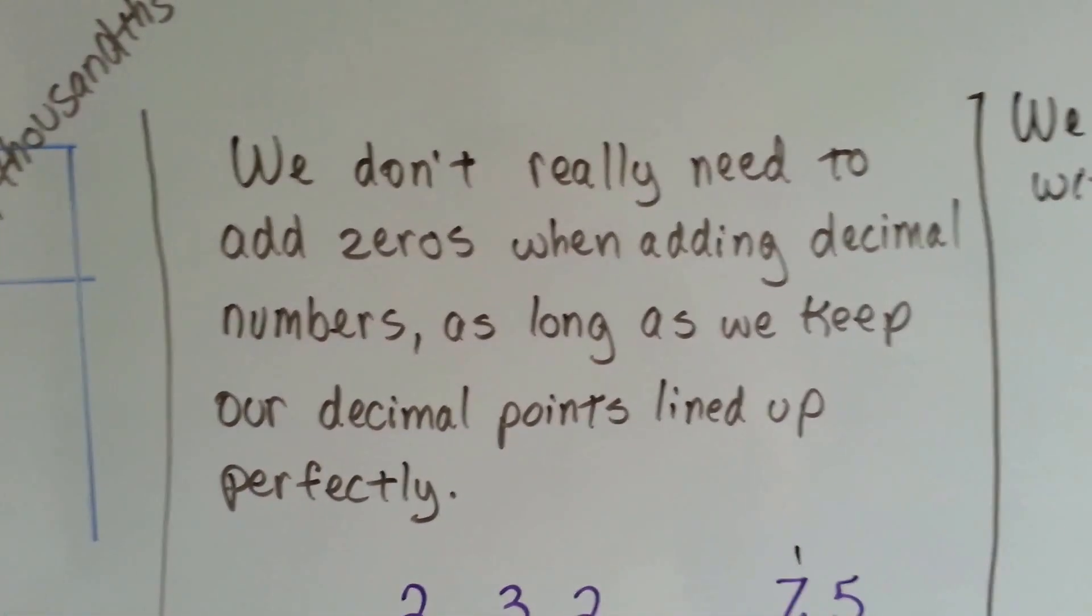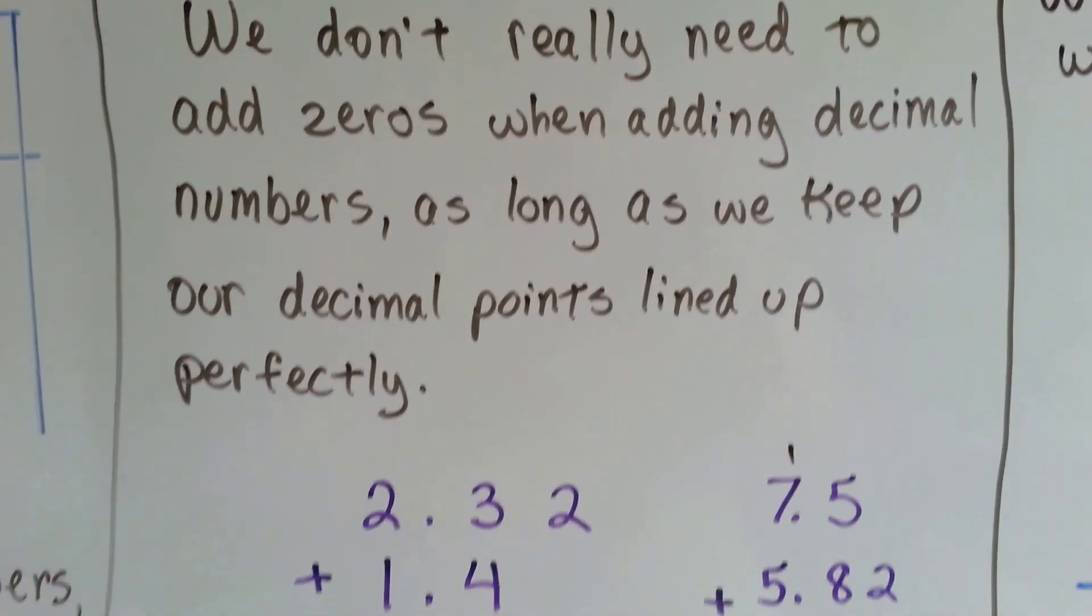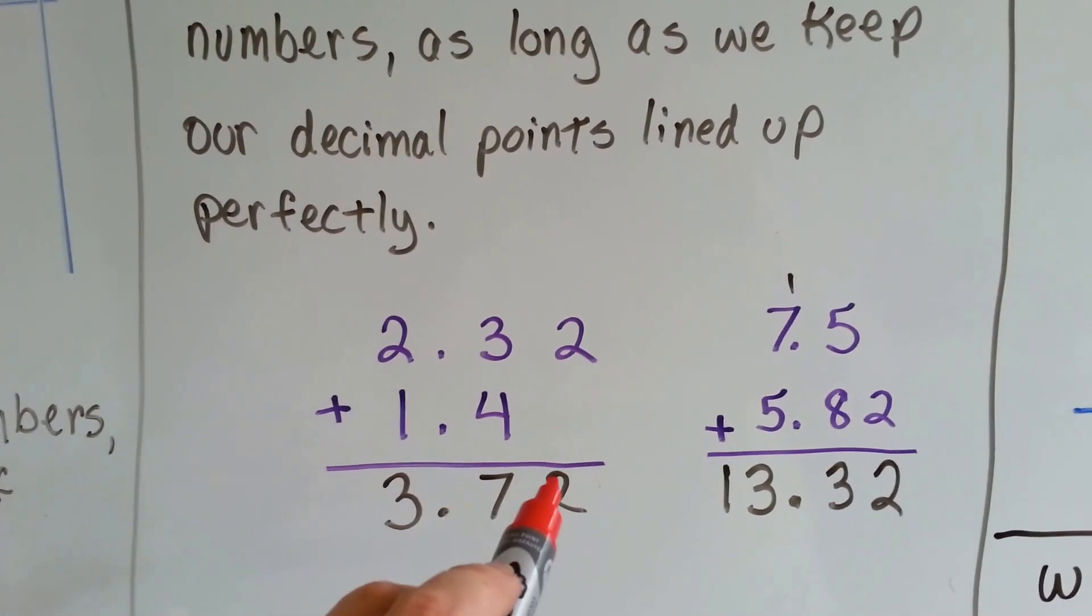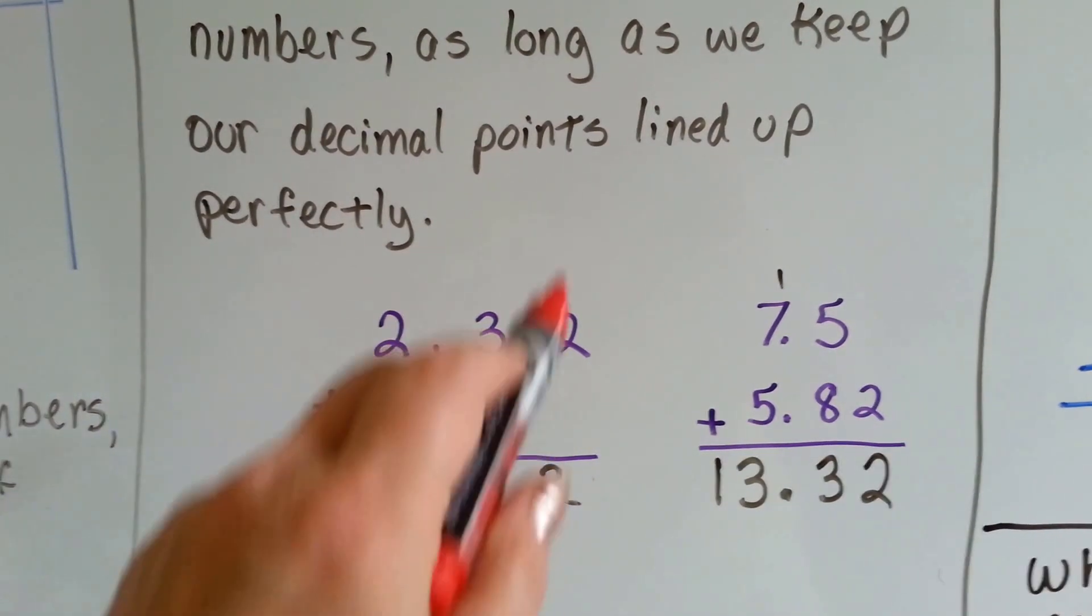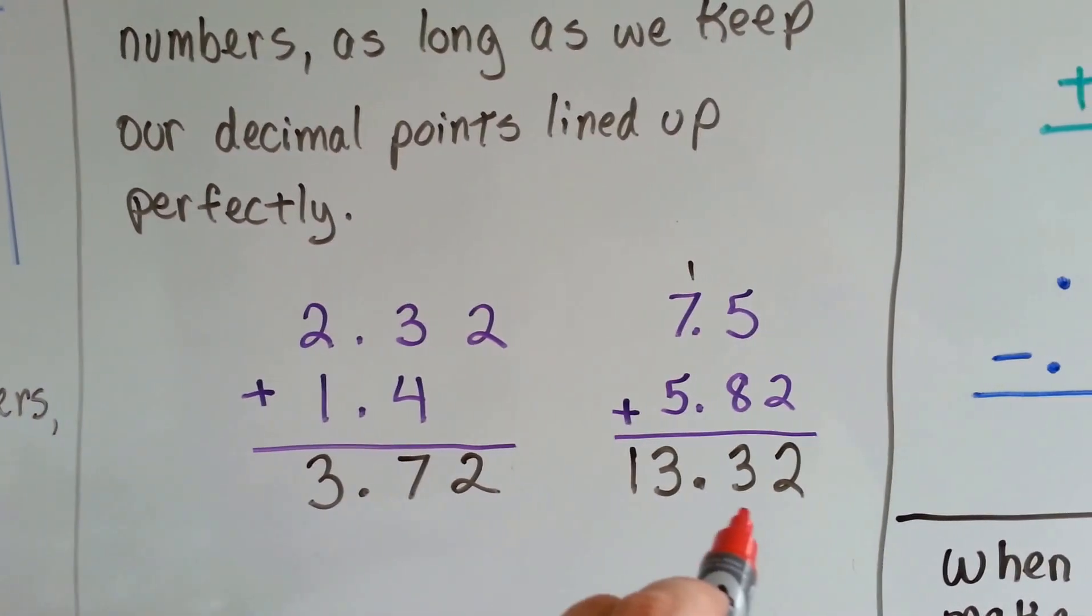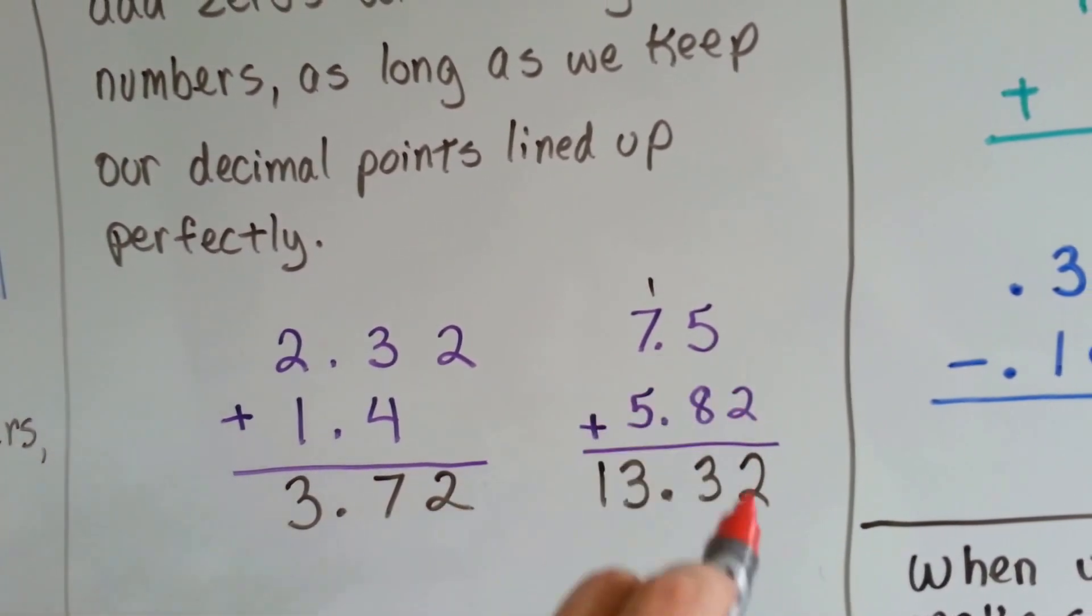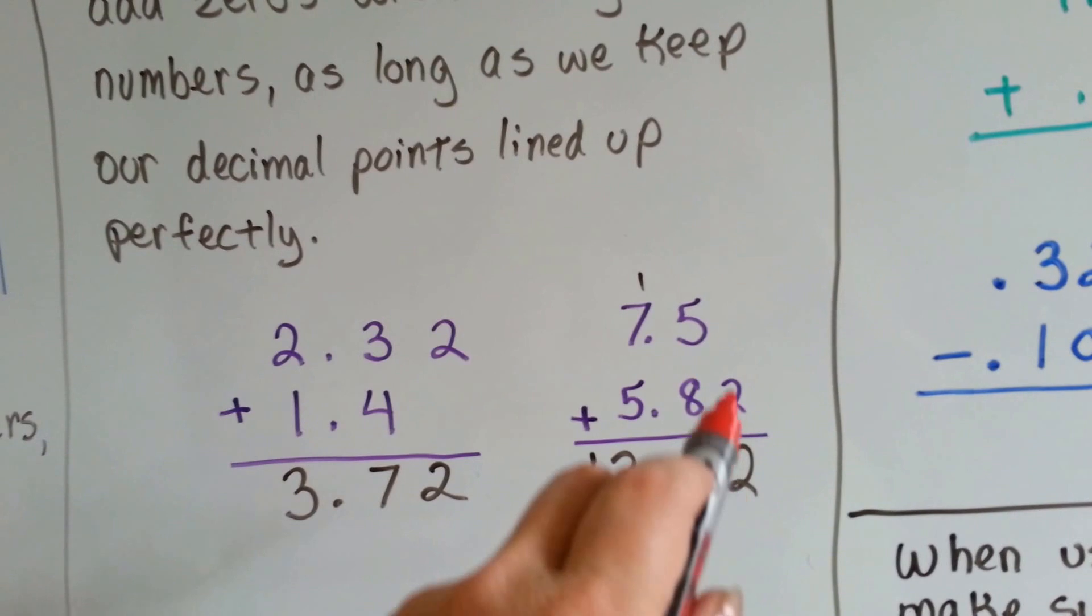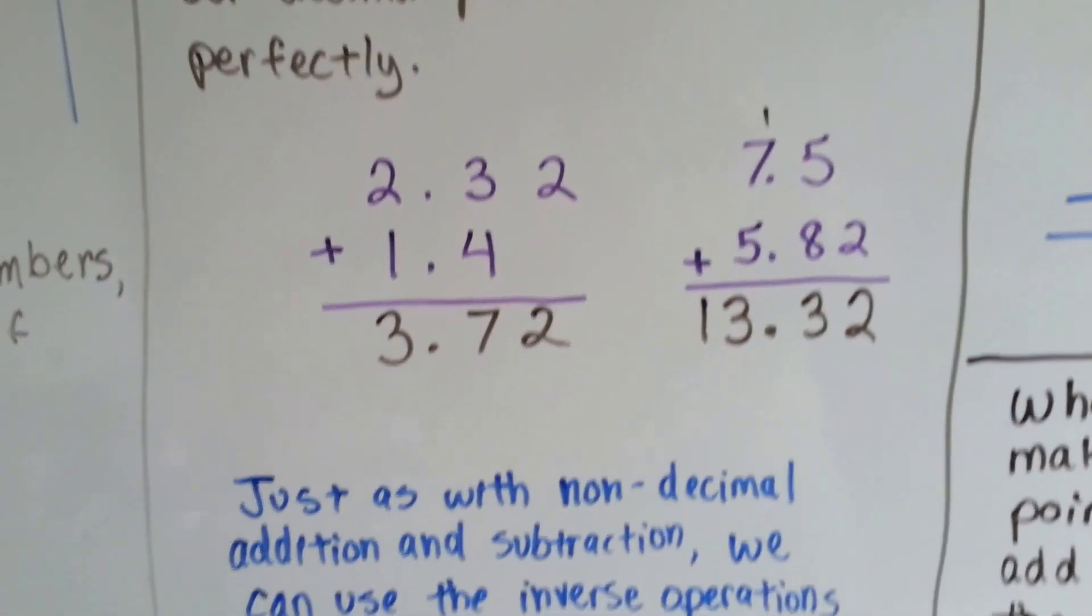We don't really need to add zeros when adding decimal numbers if we don't want to, as long as we keep our decimal points lined up perfectly. We could put a zero there if we wanted to, but we don't have to. If we're adding these two, as long as the decimal points are lined up pretty and perfect, we can just drop the two down. And even in this situation, if we're not renaming or regrouping that particular number, we don't need to really put a zero there. We can just go straight down. We know it would be a zero. You could put it there if you want to. It's just not necessary.